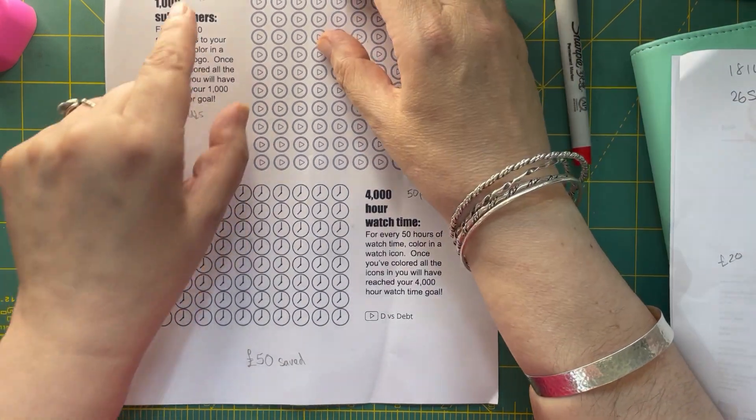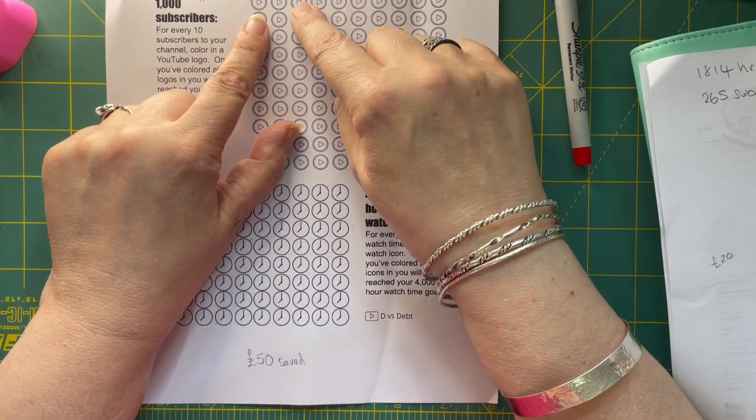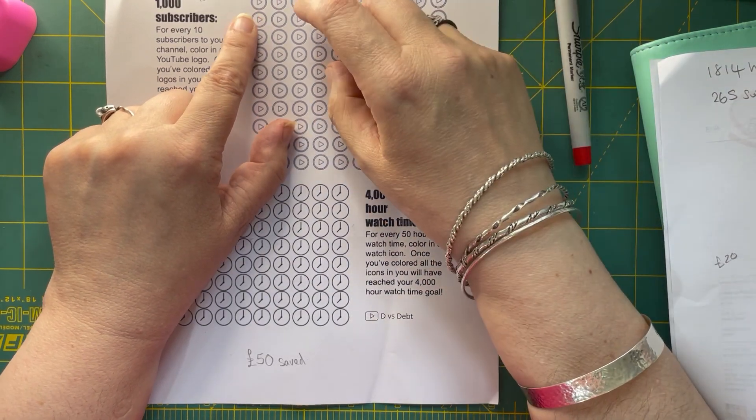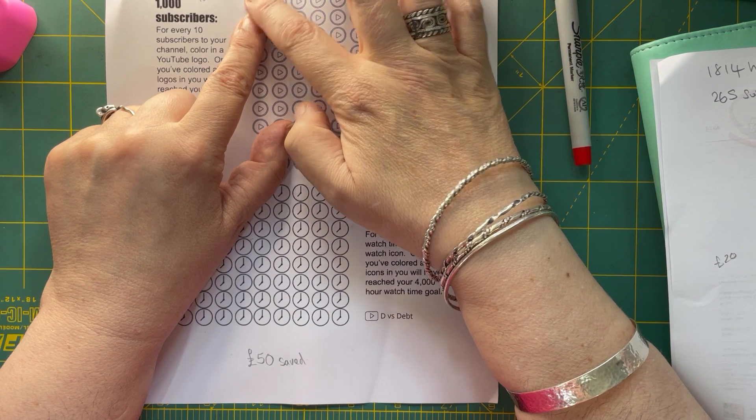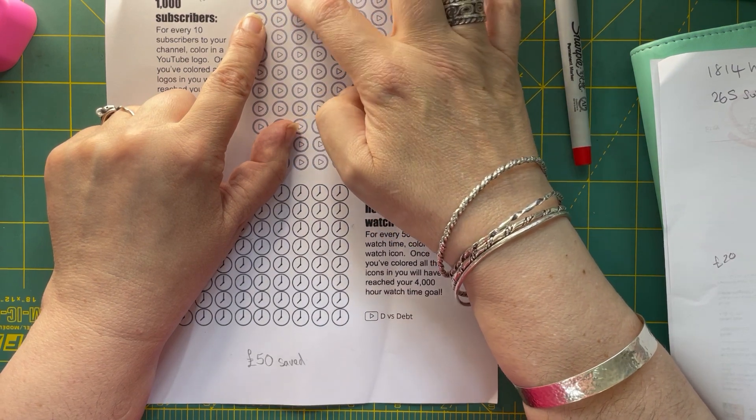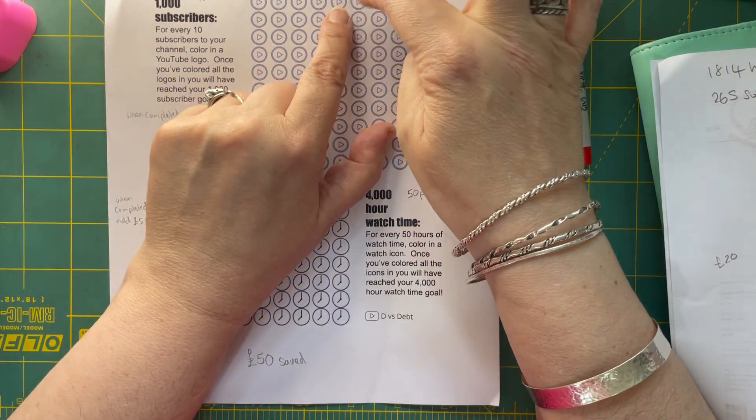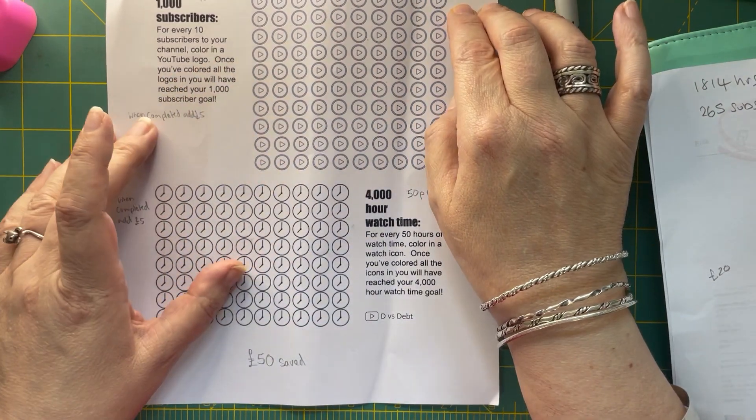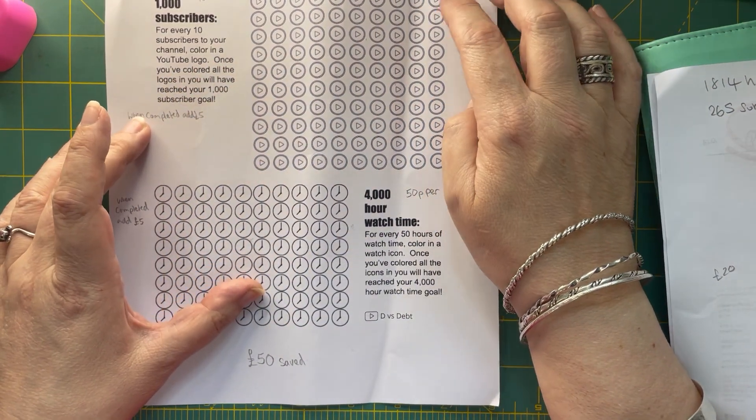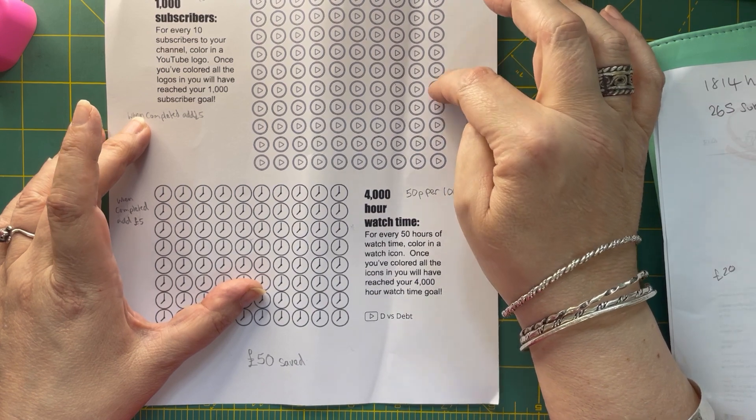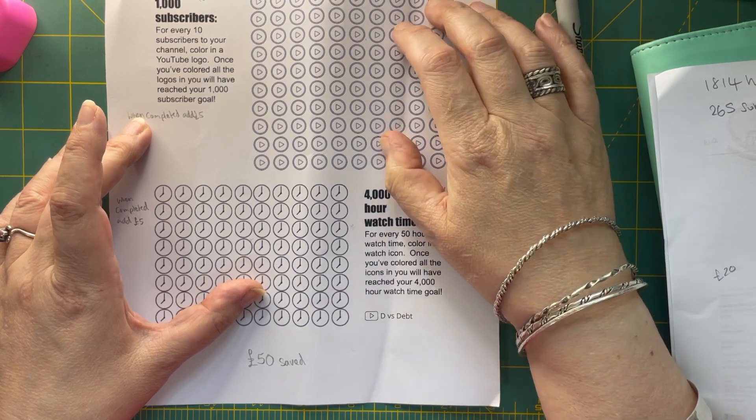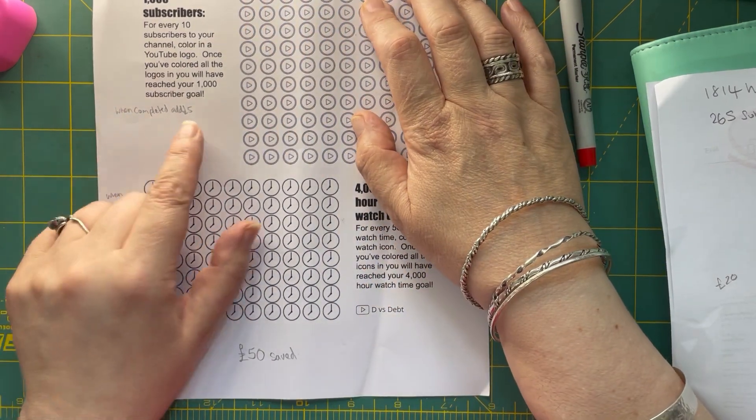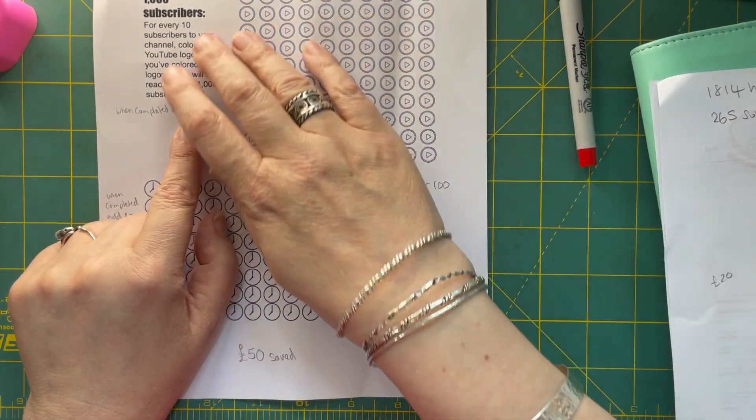And I've worked out that I'm going to do 20p per little, per 10. So that will make it 20, 40, 60, 80, one pound, 20, 40, 60, 80, two pounds, which may not seem much but it will soon add up. That's 20 pounds and I've decided once I've completed that I'm going to add five pounds so it'll be 25 quid for that.